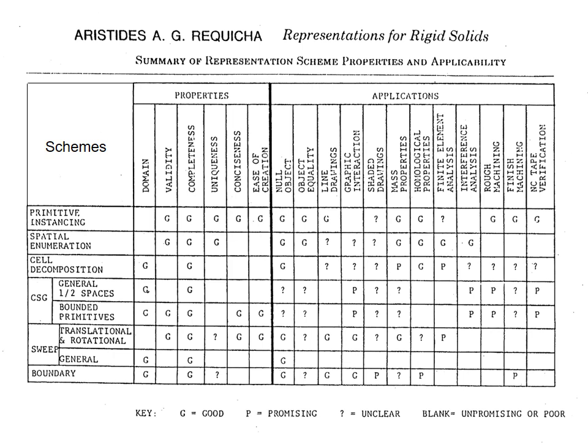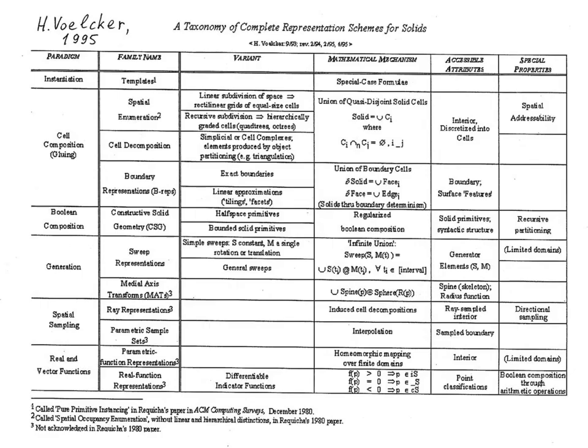A summary table from Rakesha's paper lists representations and their properties and applications. The list of representation schemes in 1980 was not long. A similar table made in 1995 by Hilbert Walker already added five new representations: medial axis, ray representations, parametric sample sets, parametric function representations, and real function representations.